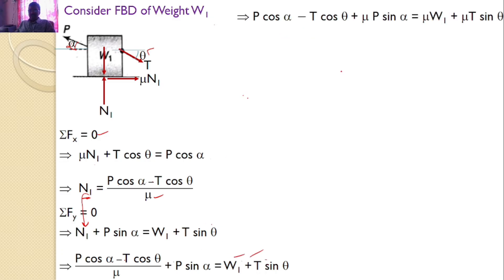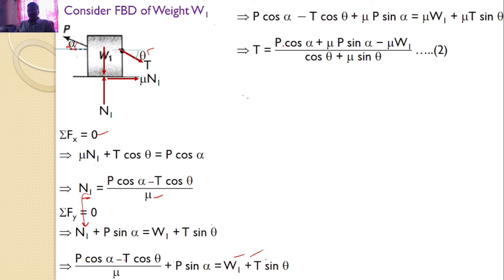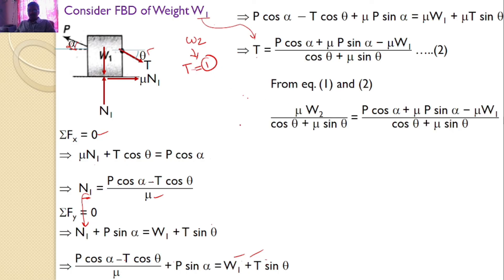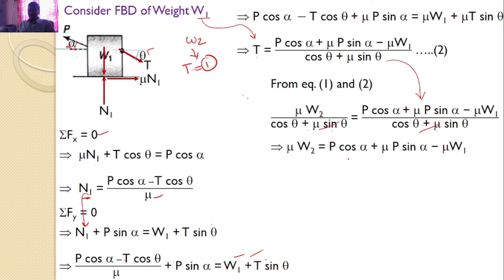From this equation, solving for T gives: T = (P cos(alpha) + mu*P sin(alpha) - mu*W1) / (cos(theta) + mu*sin(theta)). By considering the free body diagram of W2, I calculated T in equation 1. By considering W1, I also calculated T. Equating both expressions, we get: mu*W2 / (cos(theta) + mu*sin(theta)) = (P cos(alpha) + mu*P sin(alpha) - mu*W1) / (cos(theta) + mu*sin(theta)). The denominators cancel, giving: mu*W2 = P cos(alpha) + mu*P sin(alpha) - mu*W1.